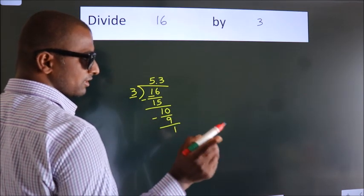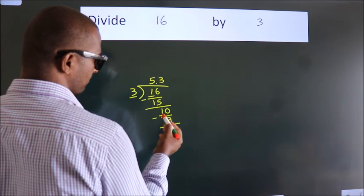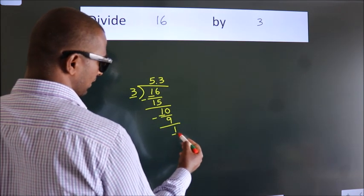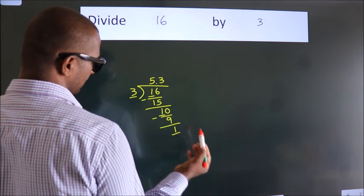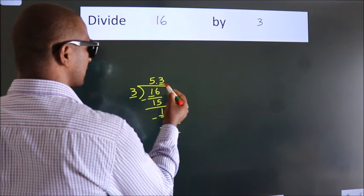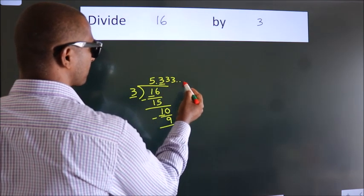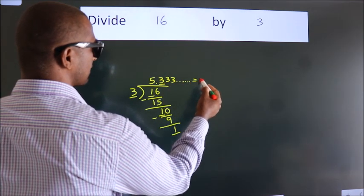Now you observe, we had 1 here and we got 1 again. That means this number keeps on repeating. So this is our quotient.